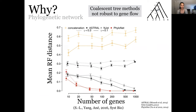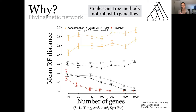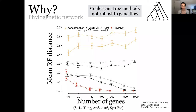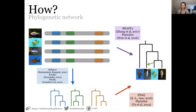Once we include a network method — in this case PhyloNet — and plot the mean Robinson-Foulds distance between the estimated tree and the true tree, we see that the distance from PhyloNet goes to zero as we increase sample size or number of genes. If you are interested in the main tree and there was gene flow, you should still use a network method. You can ignore the gene flow event afterward, but the network method gives you the correct underlying tree structure and is more robust to gene flow than species tree methods alone.